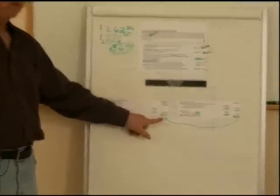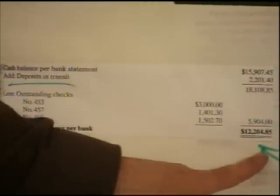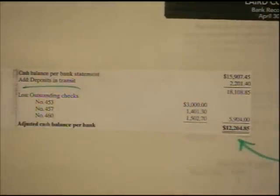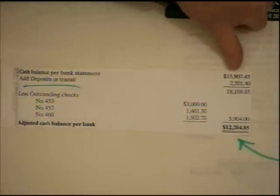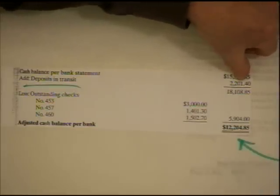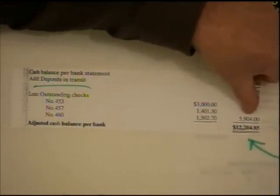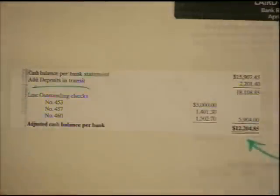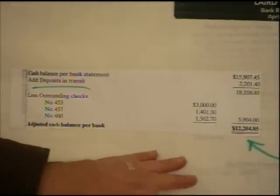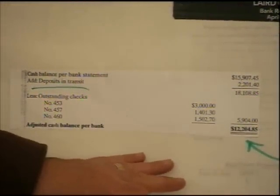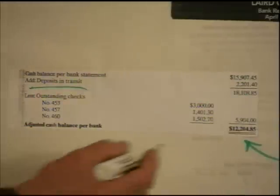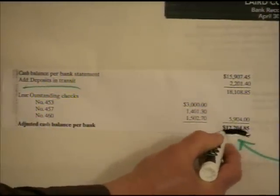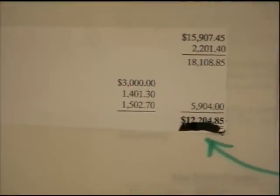Once we've done that, we subtract it from our subtotal, and that really is the adjusted cash balance per the bank — that's what your checkbook really should equal. It's a real quick procedure for the bank side: you take your balance per the bank, add your deposit in transit, and subtract your outstanding checks. I say do the left side first because it's easier — it's just three numbers working together. So that would be our total right there: $12,204.85.